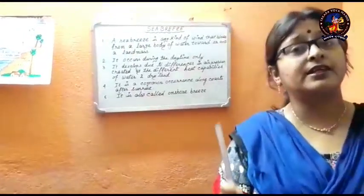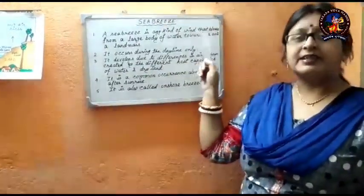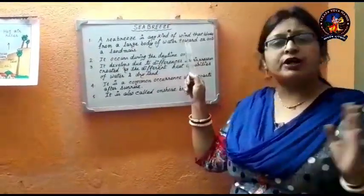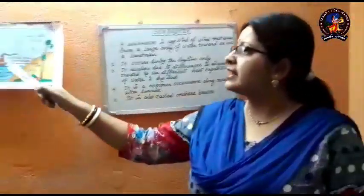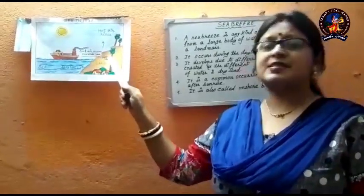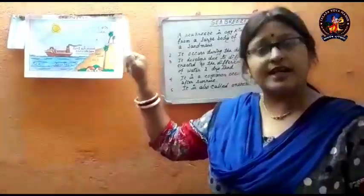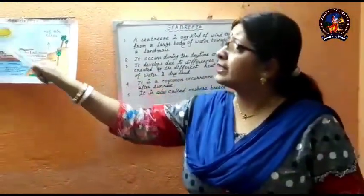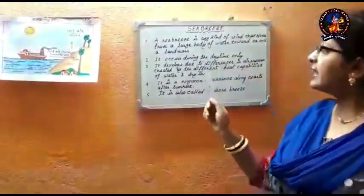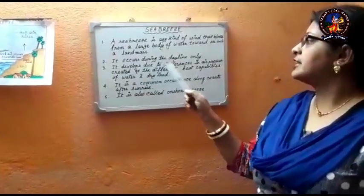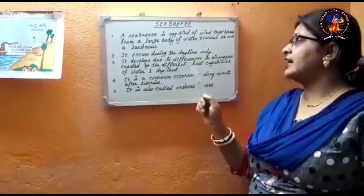A sea breeze is any kind of wind that blows from a large body of water toward or onto a landmass. Here you can see cool air moves towards the land and hot air rises. Sea breeze occurs during the daytime only. It develops due to the difference in air pressure created by the different heat capacities of water and dry land.